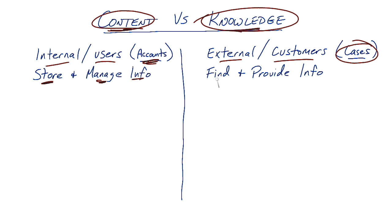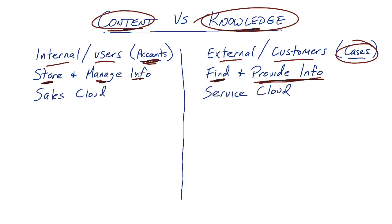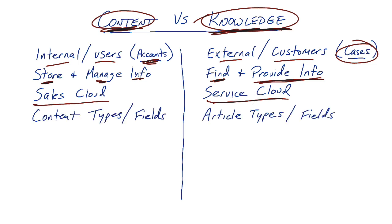When you think of knowledge, think of putting articles out there on the web for people to find, providing knowledge and wisdom to customers. You'll notice that when you look in the help forum and success communities, articles published about content are attached to the sales cloud within Salesforce, while articles published about knowledge are attached to the service cloud — giving you a good idea of how these were intended to be used. When creating content records versus knowledge records, they're very similar: you have content types based on fields in page layouts, and in knowledge you have article types based on fields and their page layouts.